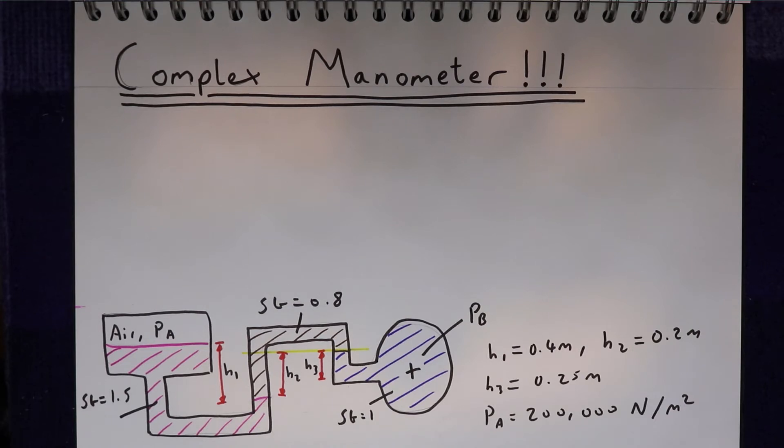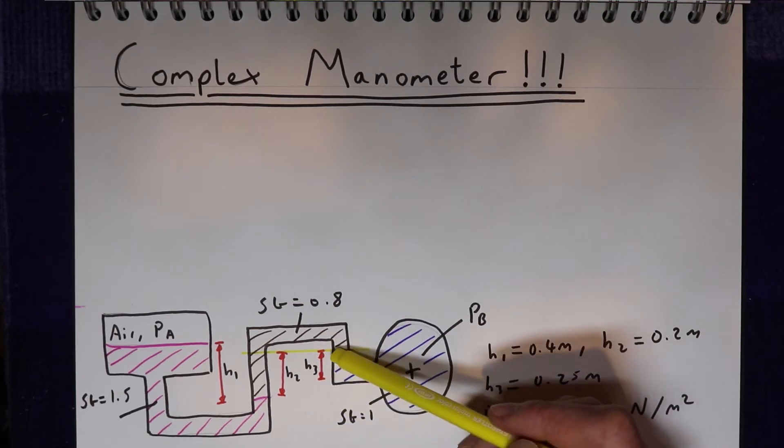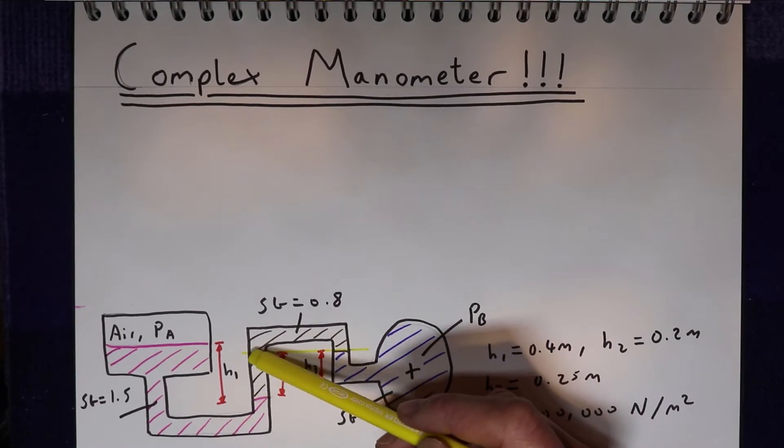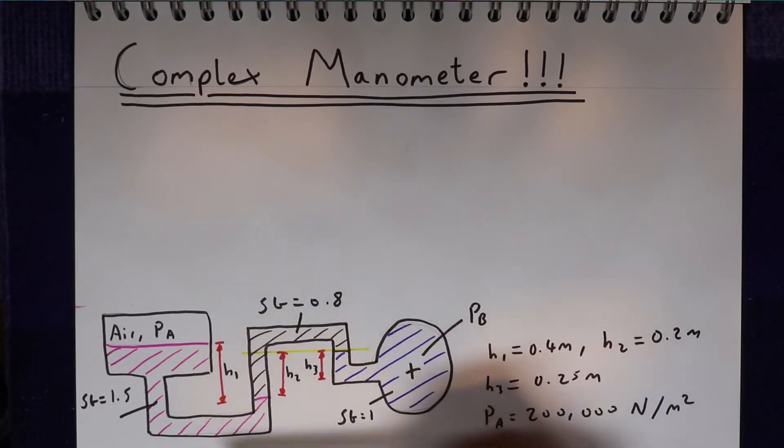And then what we can say is that the pressure pushing on this side of the line must be equal to the pressure pushing on this side of the line if none of the liquids in the system are moving. Just like a set of scales where if you have the same weight on both sides the scales are stationary, if all of these fluids are stationary then we know that whatever's pushing up here must be the same as whatever's pushing up here.